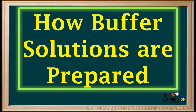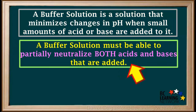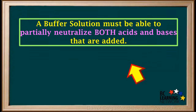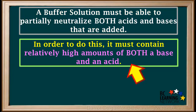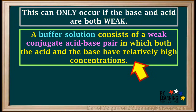Now we'll take a look at how buffer solutions are prepared. To be able to minimize changes in pH, a buffer solution must be able to partially neutralize both acids and bases that are added to it. In order to do this, it must contain relatively high amounts of both a base and an acid. This can only occur if the base and acid are both weak. A buffer solution consists of a weak conjugate acid-base pair in which both the acid and the base have relatively high concentrations.